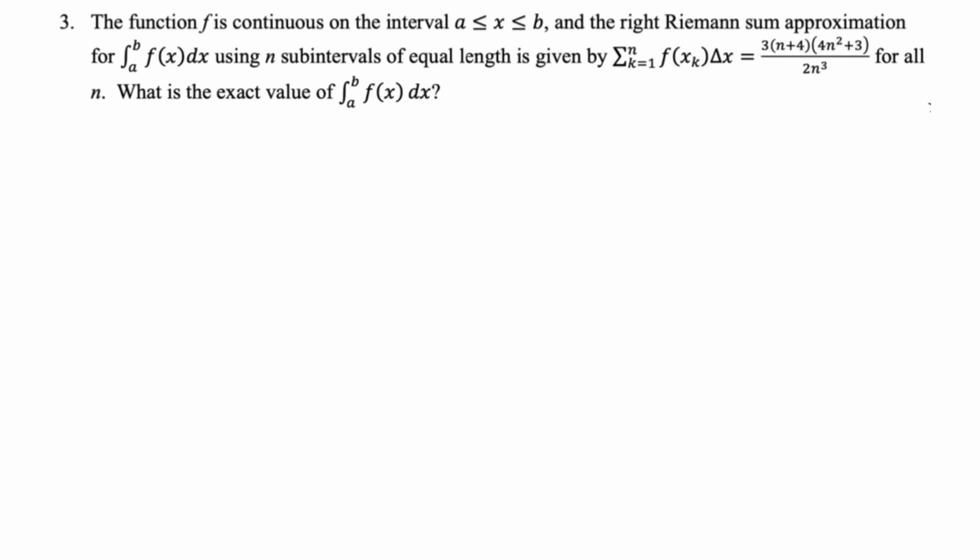The function f, continuous on the interval from a to b — the right Riemann sum approximation for the integral from a to b of f(x) dx using n subintervals of equal length is given by the sum from 1 to n of f(x_k) · Δx. We're given that this summation works out to 3(n + 4)(4n² + 3) all over 2n³ for all n.